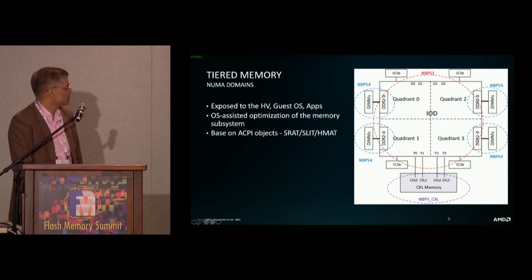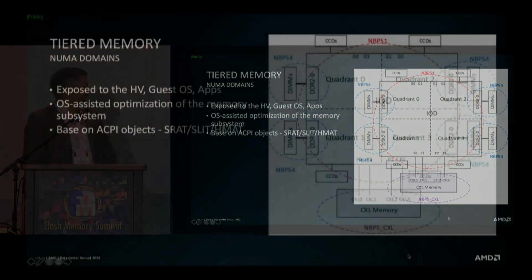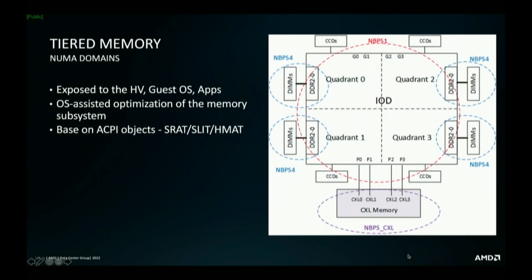We have static resource allocation tables and heterogeneous memory attribute tables which tell you what type of memory it is, what bandwidth it is, how much latency it is, and then accordingly allocate processor accesses to that type of memory.